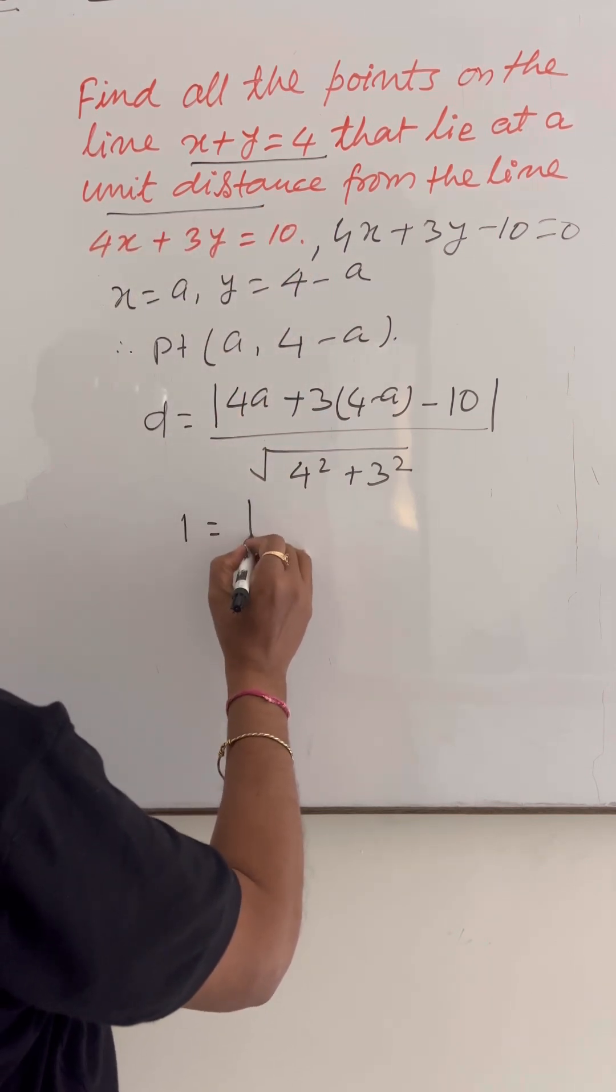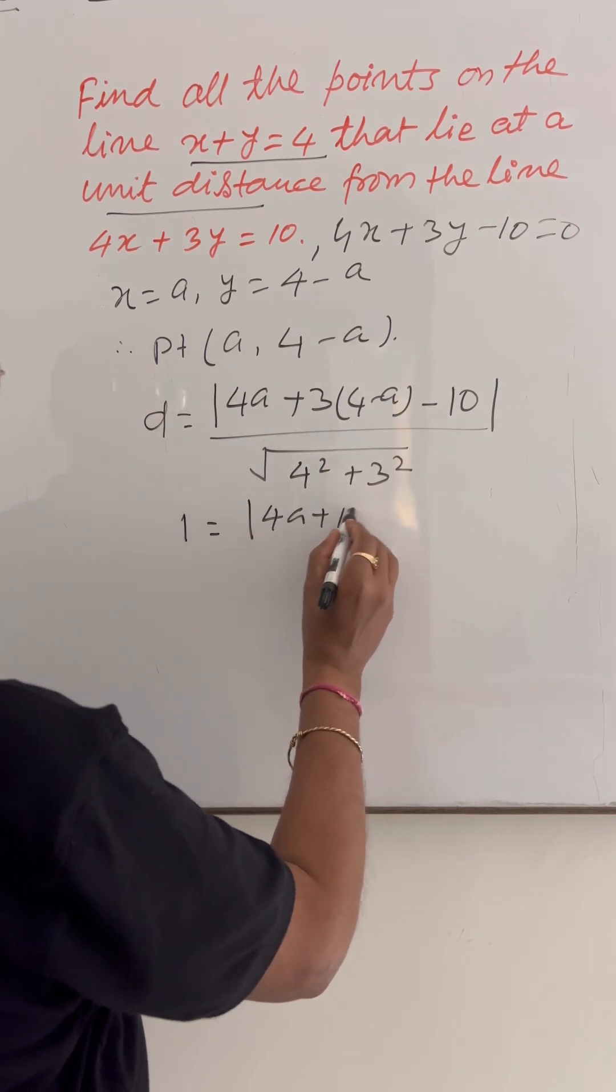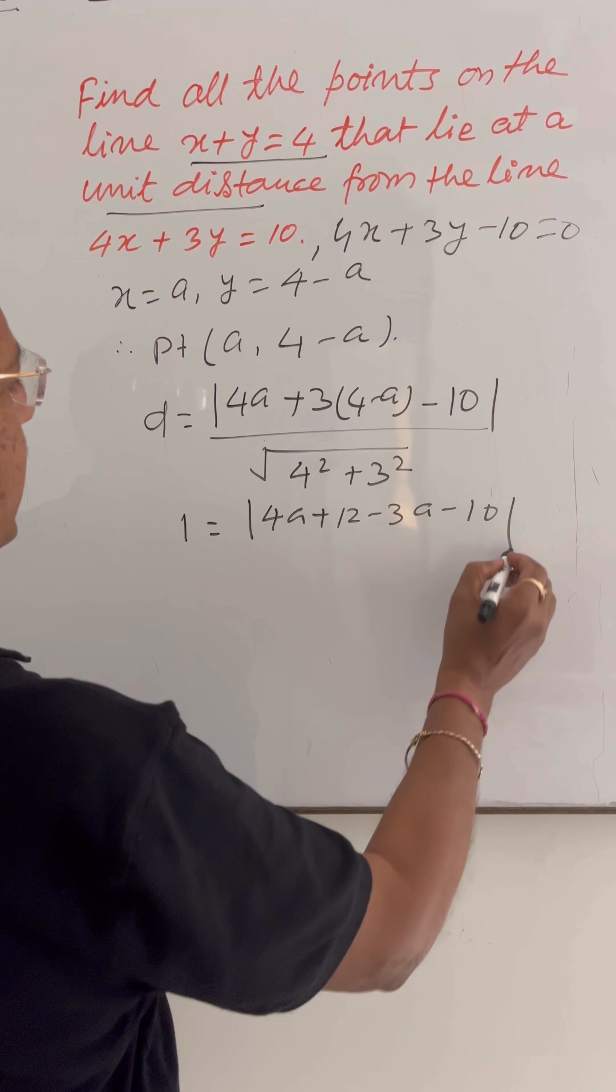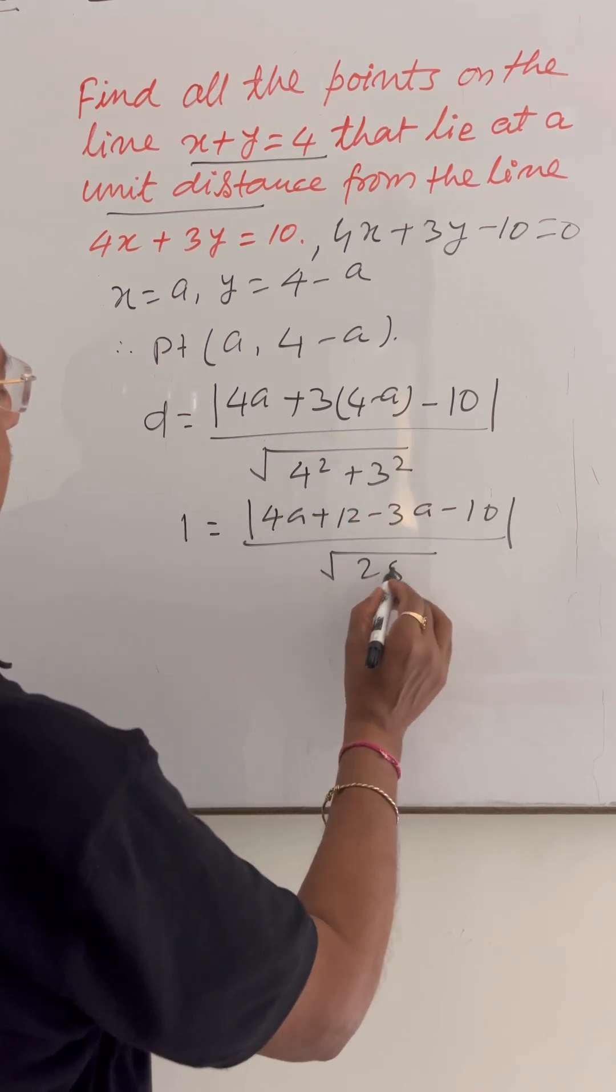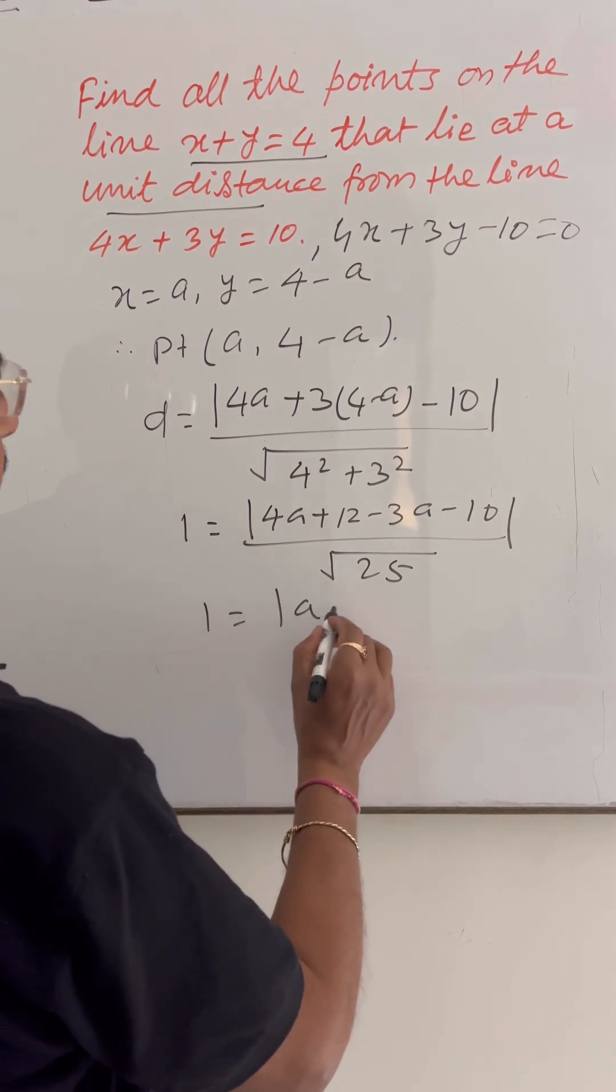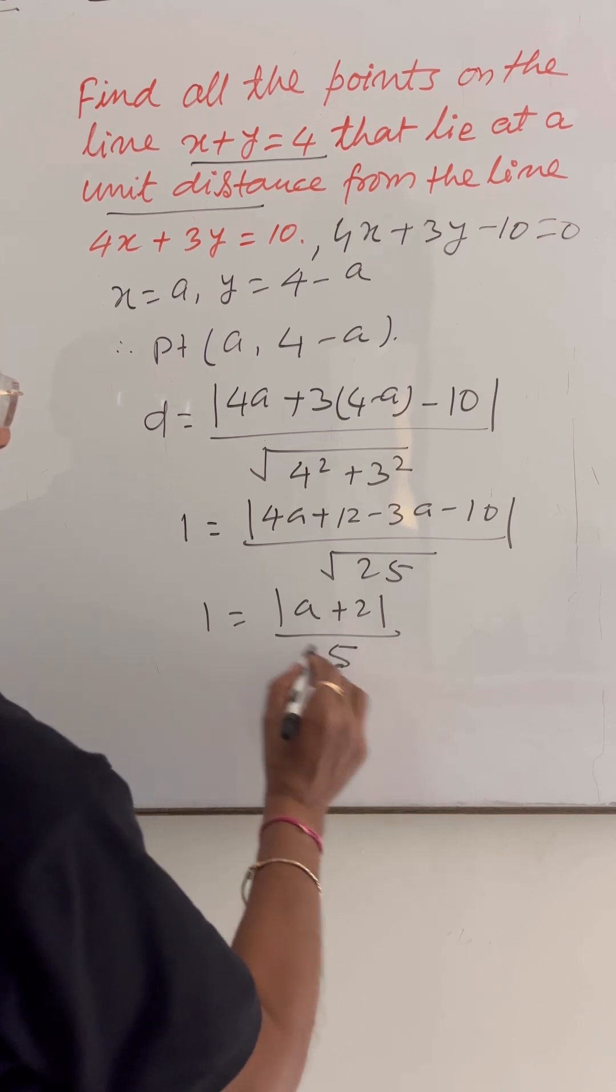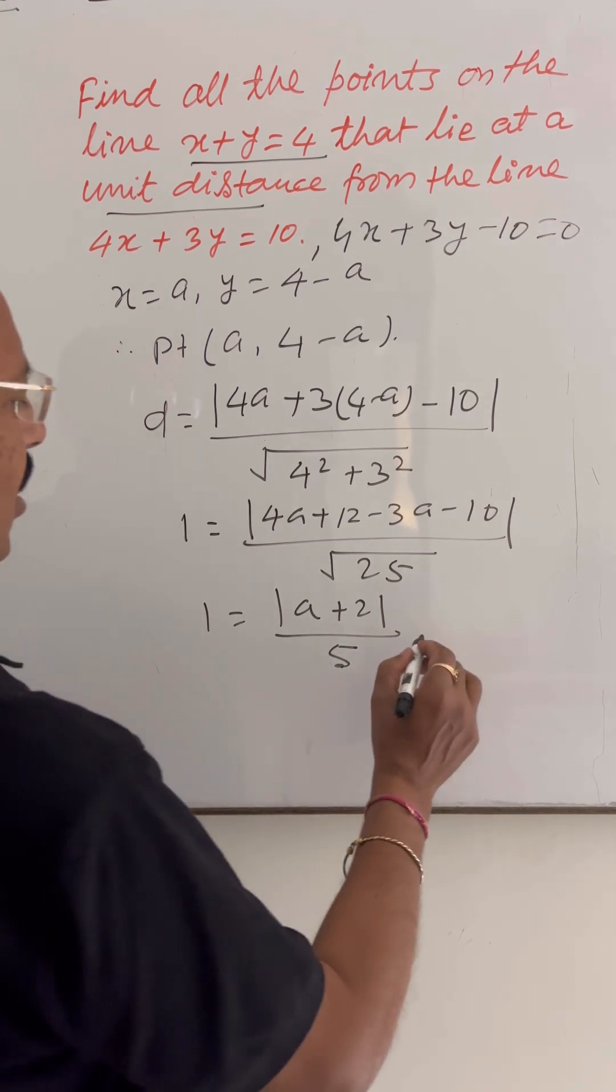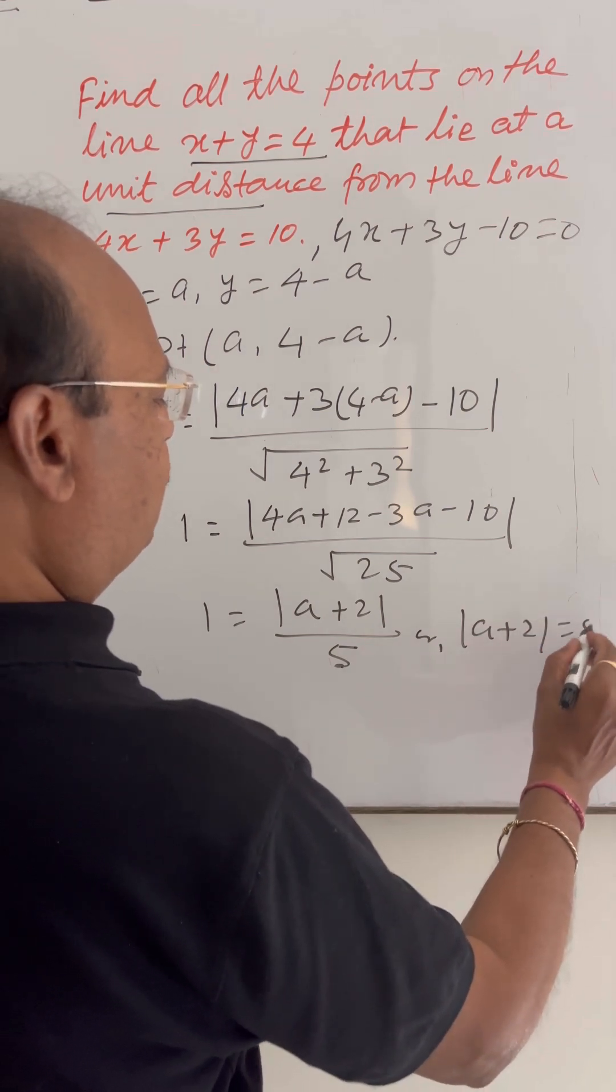1 is equal to modulus of, simplify it, this is 4a plus 12 minus 3a minus 10 upon square root of 25. Or, 1 is equal to modulus of a plus 2 upon 5. Or, by cross multiplication, we will get modulus of a plus 2 is equal to 5.